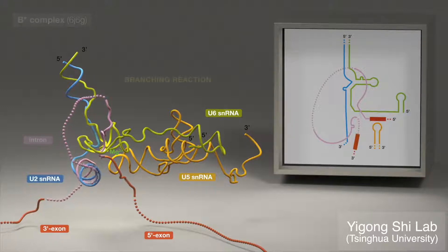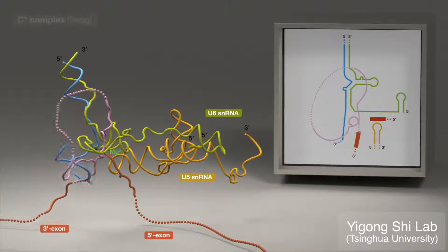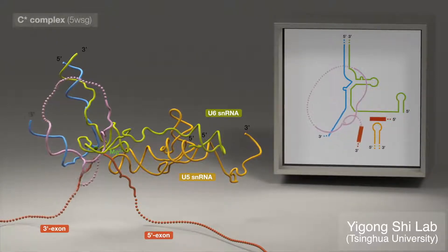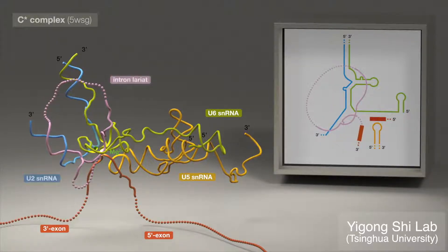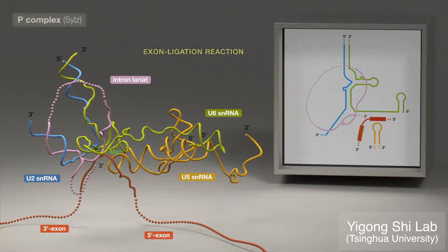From B-star to C, RNA remodeling is minor, as the branching reaction gives rise to the intron lariat. Major remodeling is again evident from C to C-star, as the lariat junction is removed from the active site to make room for the 3' splice site reactant. From C-star to P, movements in spliceosomal RNAs are again minor, as this reaction ligates the exons and gives birth to the mature spliced mRNA.